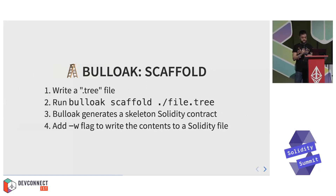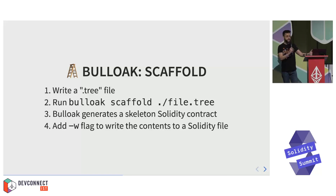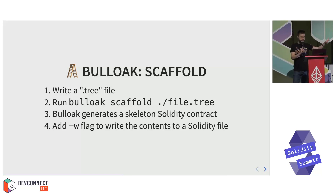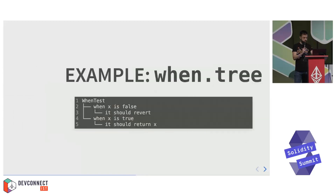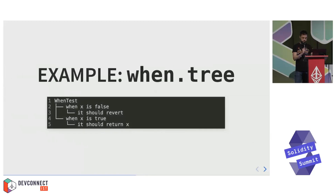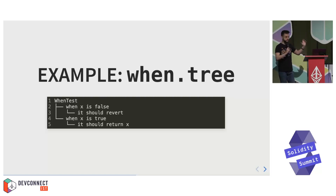The way you typically start is you write the tree file, and then thanks to Bulloak, you can run scaffold and pass the tree file. By doing this, you will get a skeleton Solidity contract. I'll show you an example — it's always easier with an example. This is how it actually looks. This is the simplest possible tree.